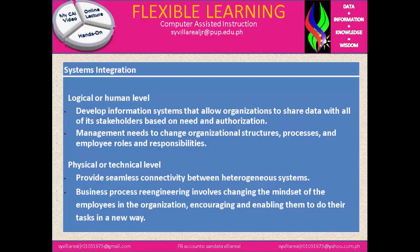System integration is identified in two process levels. The first one is the logical or human level, and the second one is the physical or technical level. The logical or human level develops information systems that allow organizations to share data with all of its stakeholders based on need and authorization.